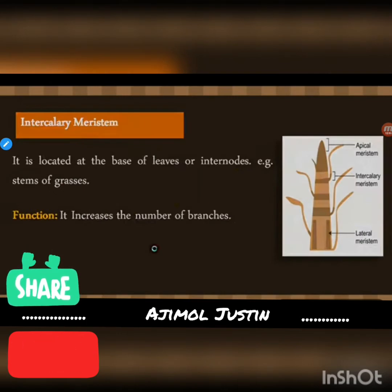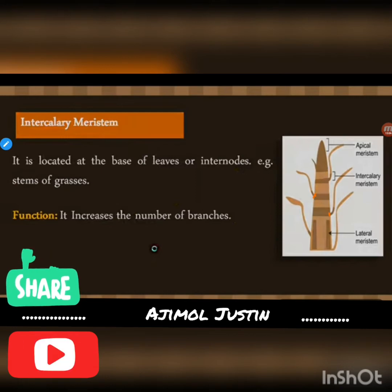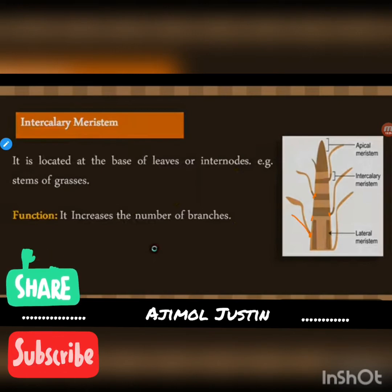The third one is intercalary meristem, located at the base of leaves or internodes. An example is the stems of grasses. Its function is to increase the number of branches.